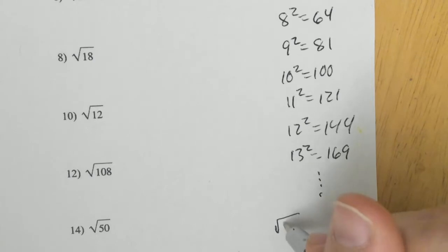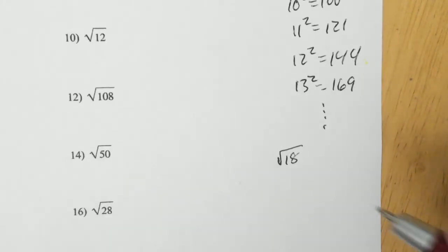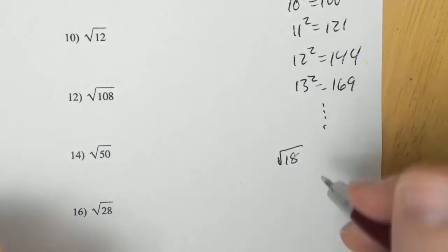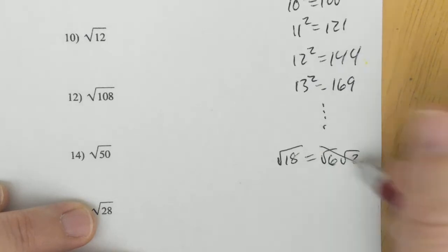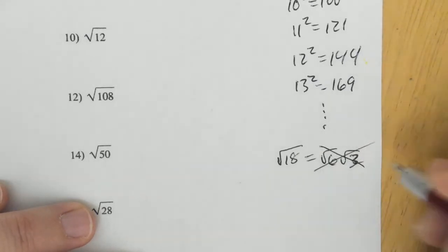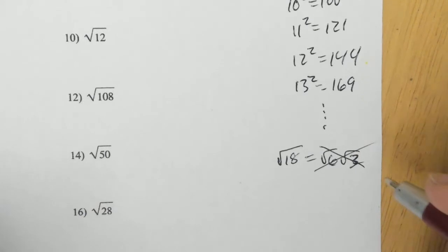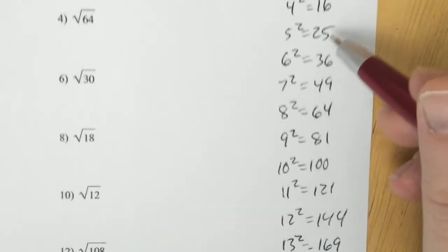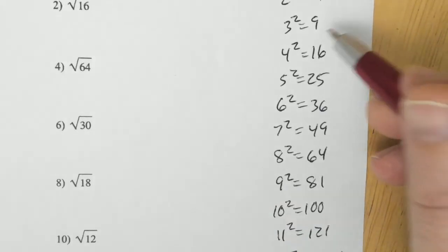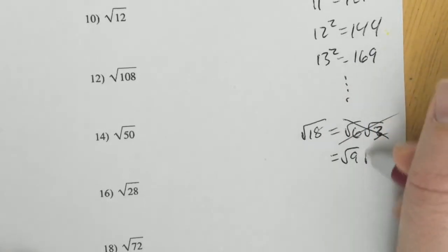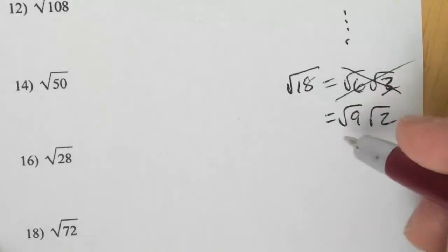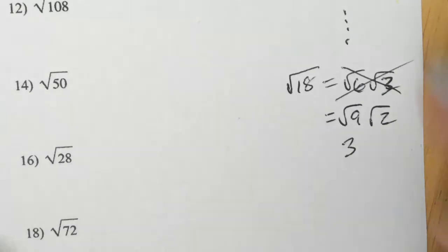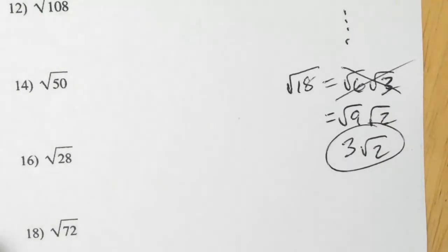The square root of 18 — we want squares. The square root of 6 and square root of 3 doesn't help you. You want squares. What square can you take out of 18? You can divide by 9. So that is really square root of 9 times square root of 2 — because 18 is another way of saying 9 times 2. The square root of 9 is 3, and we're stuck with square root of 2. That's our answer — that's how we simplify radicals.